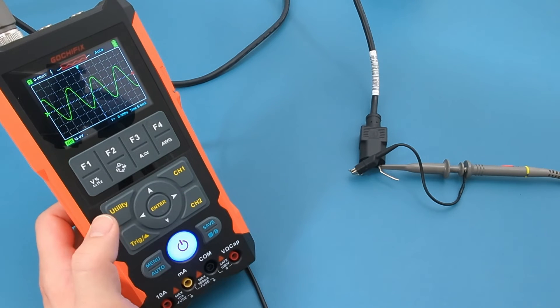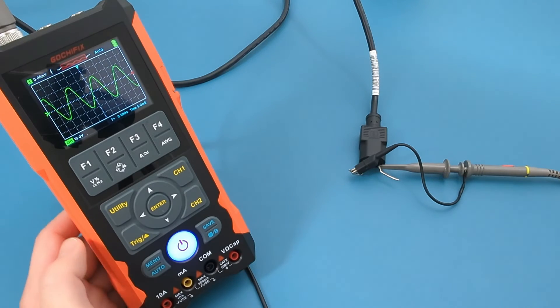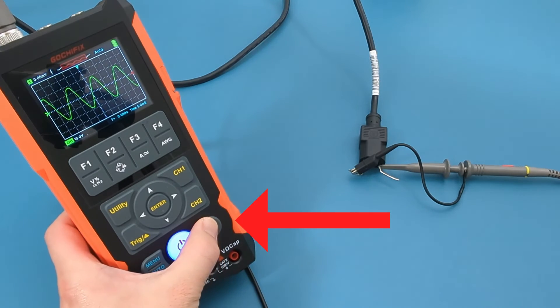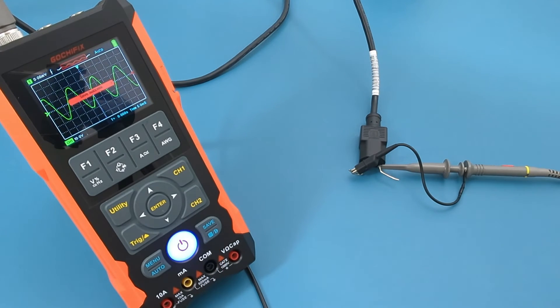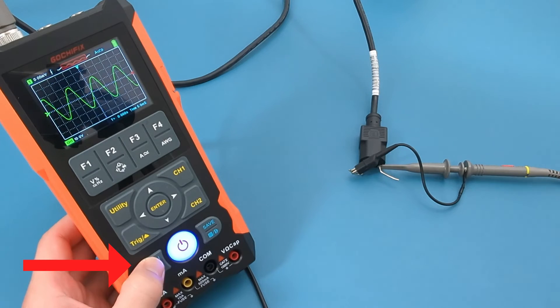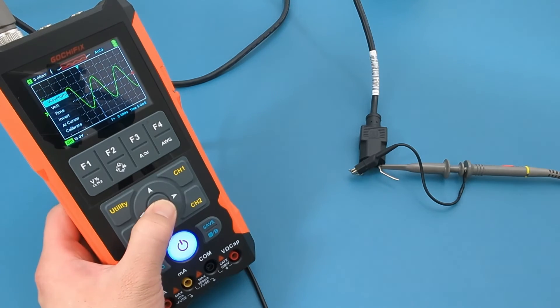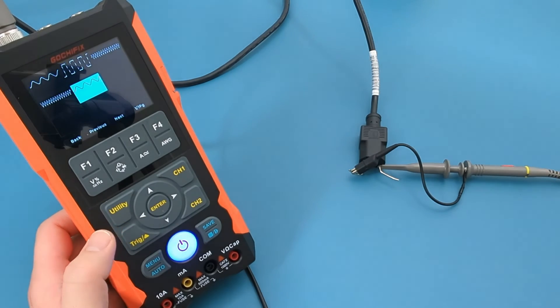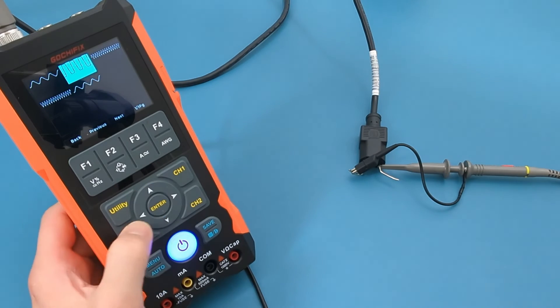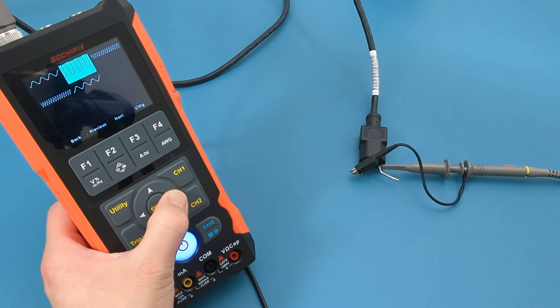If there is a waveform you want to see for later viewing, you can save it by pressing the save button. To view the saved waveforms, press the menu button. When waveform is selected, press the enter button to view it.